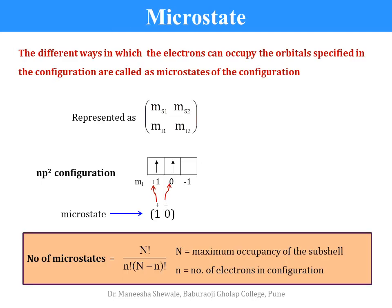When we write down the electronic configuration of an atom, it is an incomplete description of the arrangement of electrons in the atom. The different ways in which the electrons can occupy the orbitals specified in the configuration are called microstates of the configuration.